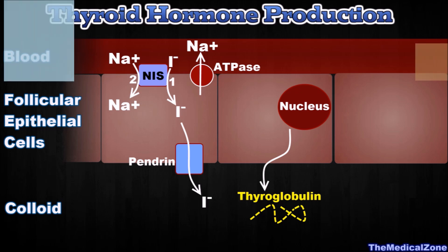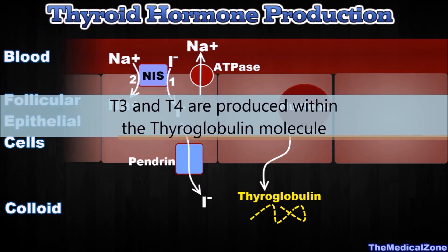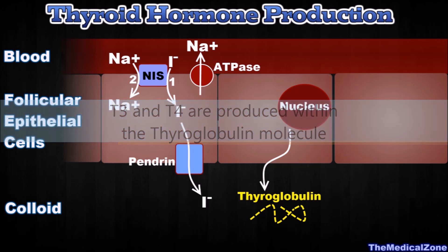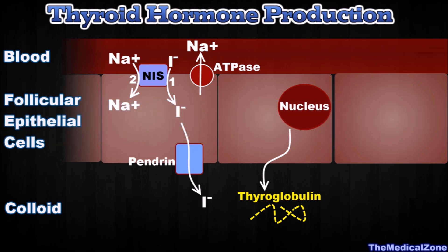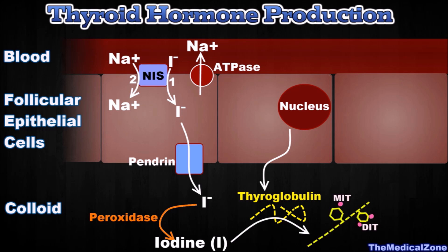T3 and T4 are produced within the thyroglobulin molecule. The combination of iodide and thyroglobulin occurs in a few steps. First, conversion of the iodide ions to an oxidized form of iodine, a process promoted by the enzyme thyroperoxidase. The second step is organification of thyroglobulin, which means the iodination of tyrosine and formation of the thyroid hormones. Tyrosine is first iodized to monoiodotyrosine, containing just one iodine, and then to diiodotyrosine, containing two iodine.